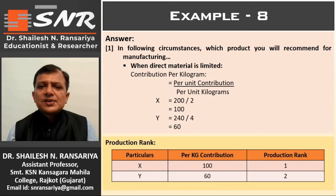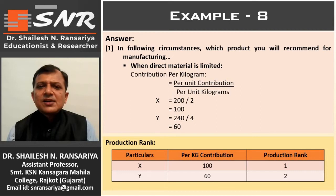An important point here: contribution per unit is 200 for Product X and 240 for Product Y, so the routine contribution is more in Product Y. But when material is the key factor, it means there is a shortage of material. In conditions of shortage, the company should first produce the product with maximum contribution per kilogram. Here Product X has the maximum at rupees 100, so company produces Product X first, then Product Y.